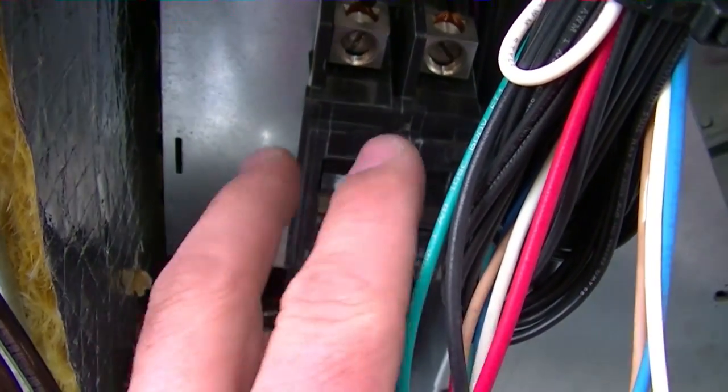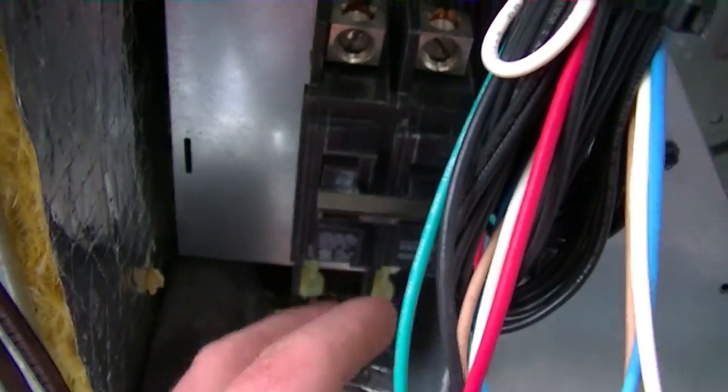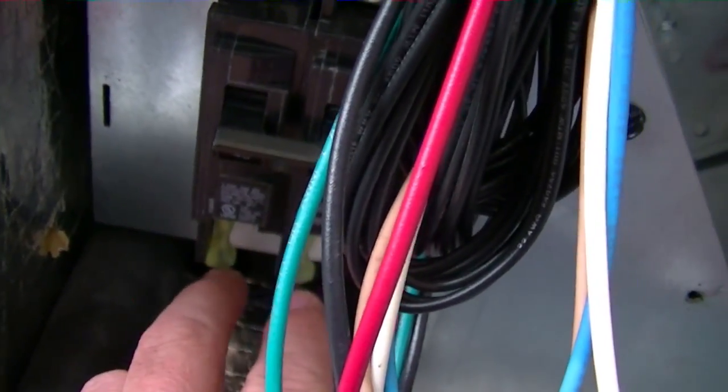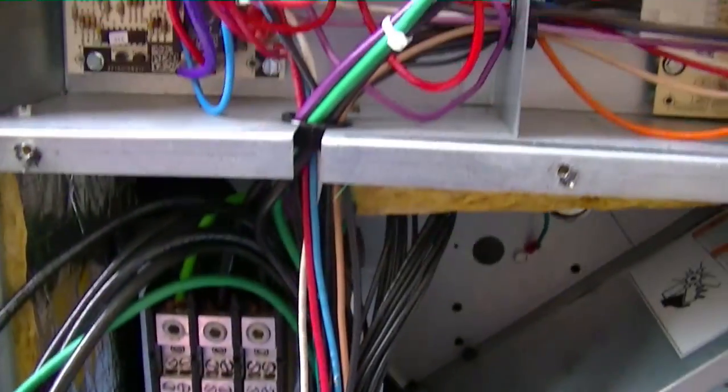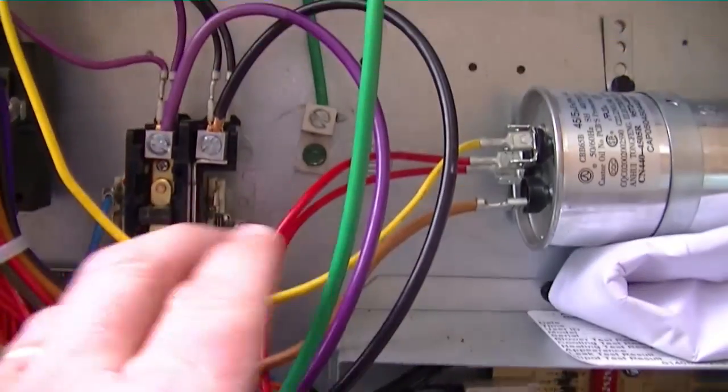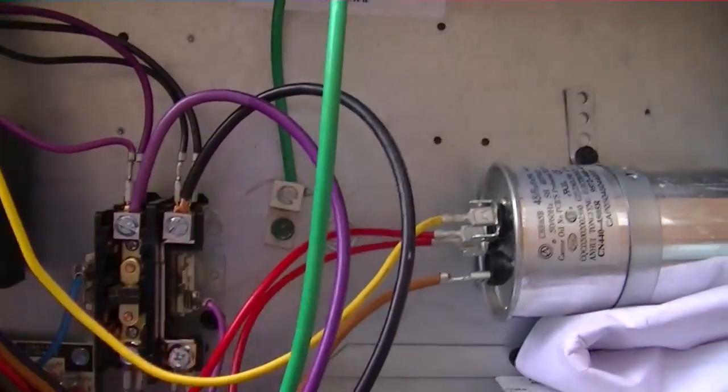The next step we take is there is a breaker inside of the single point connection kit. This one's a 40. That's why it's called an SPK 40. There's two wires at the bottom, black and purple. You run them up through into the control center and they go to the contactor and your green goes to the ground.